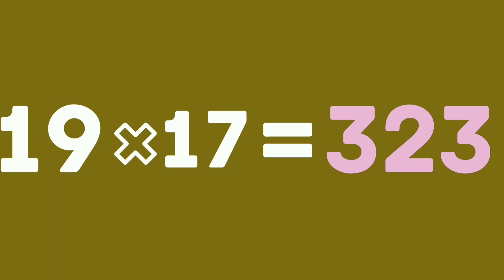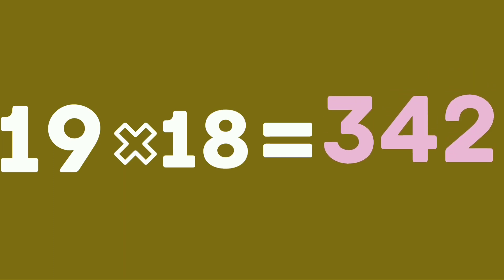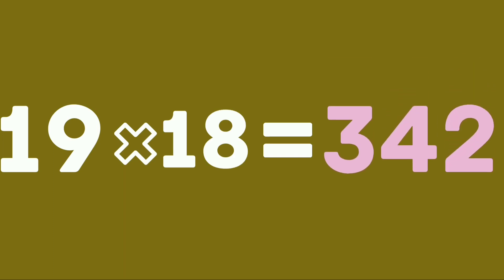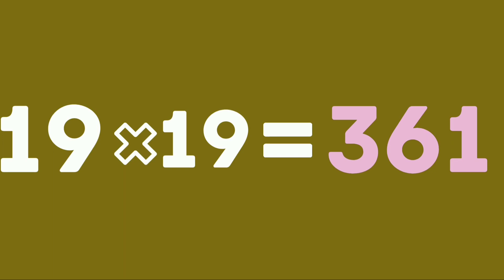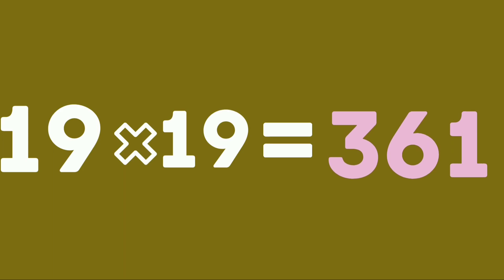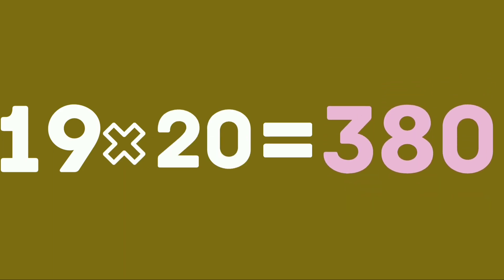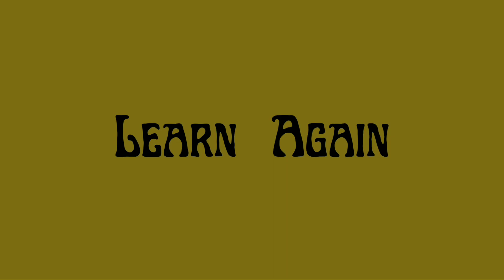19×15 are 285. 19×15 are 285. 19×16 are 304. 19×16 are 304. 19×17 are 323. 19×17 are 323. 19×18 are 342. 19×18 are 342. 19×19 are 361. 19×19 are 361. 19×20 are 380. 19×20 are 380. Learn again.